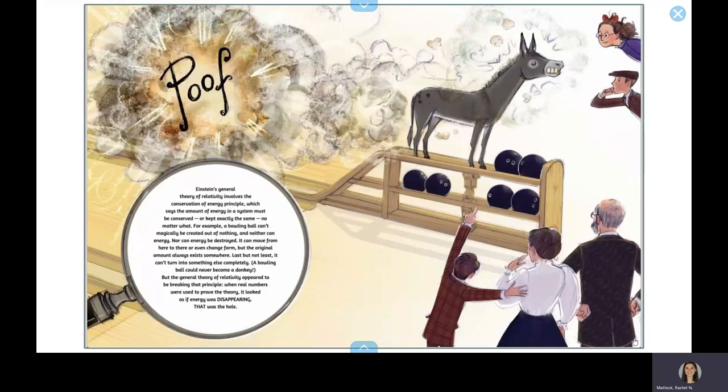Einstein's general theory of relativity involves the conservation of energy principle, which says the amount of energy in a system must be conserved or kept exactly the same no matter what. For example, a bowling ball can't magically be created out of nothing, and neither can energy. Nor can energy be destroyed. It can move from here to there or even change form, but the original amount always exists somewhere. Last but not least, it can't turn into something else completely. A bowling ball could never become a donkey.